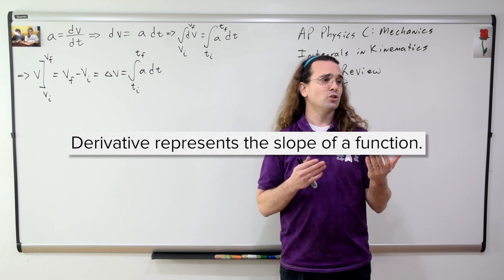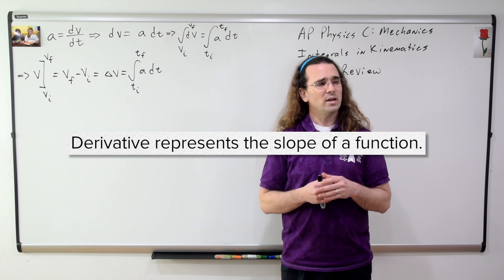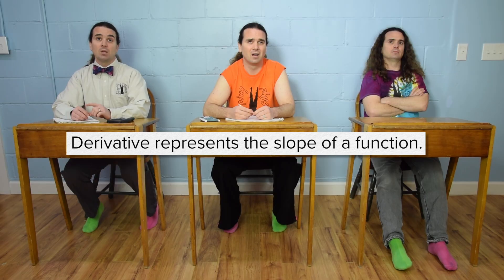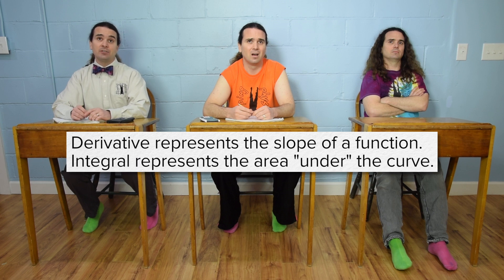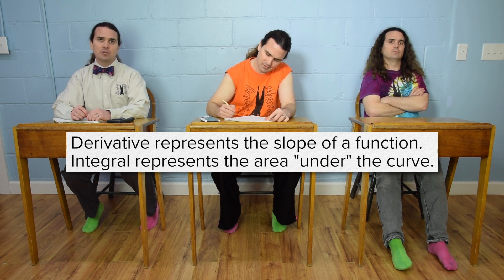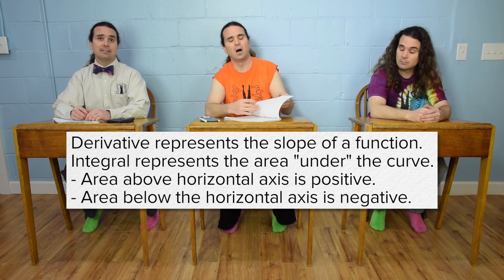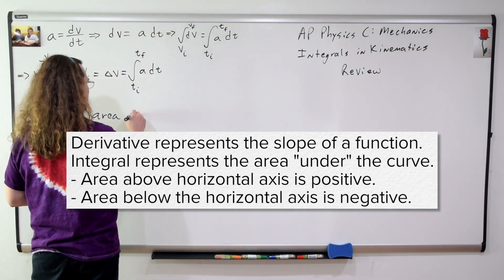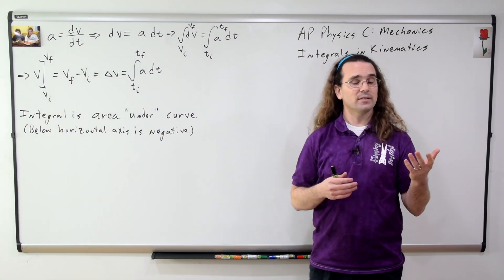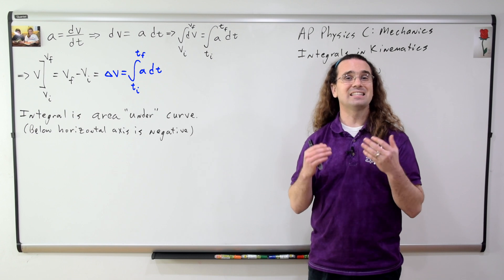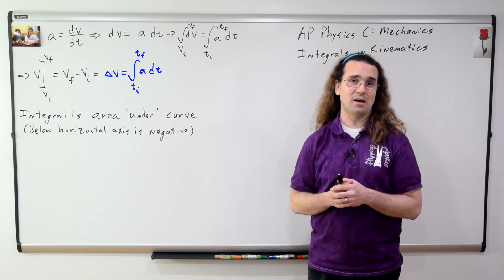The derivative represents the slope of a function — what does the integral or antiderivative represent? The integral is the area under the curve. The area under the curve specifically means the area between the curve and the horizontal axis, where the area above the horizontal axis is positive and the area below the horizontal axis is negative. So the area between the acceleration curve and the time axis is the change in velocity of the object.